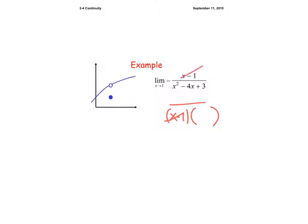The limit will work out and you'll be able to plug into the denominator, but we know that implies the point didn't exist since you had to cancel out part of the bottom. That's one example of removable discontinuity — when the denominator had to be adjusted to fit the number being plugged in.